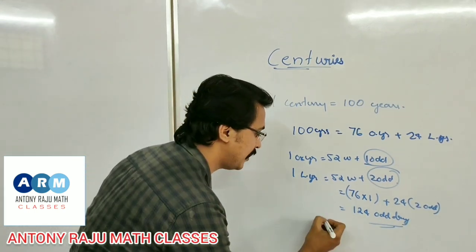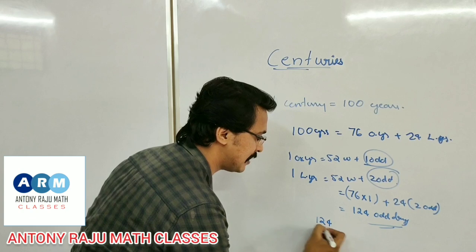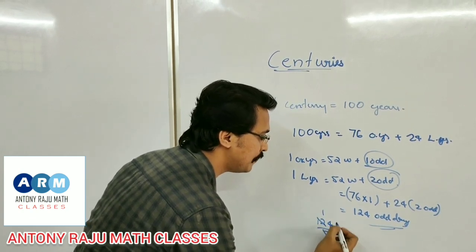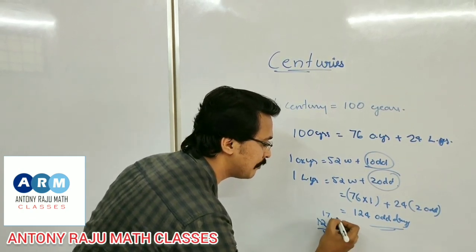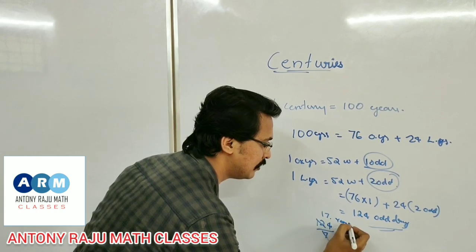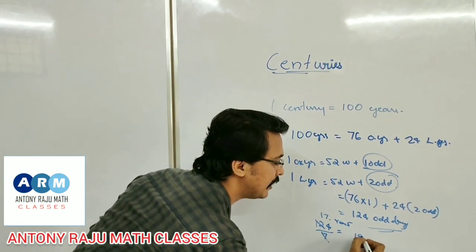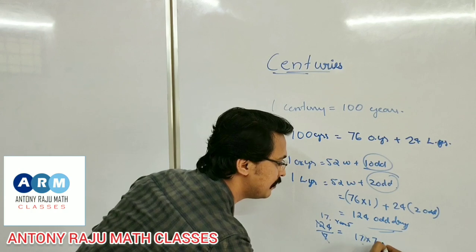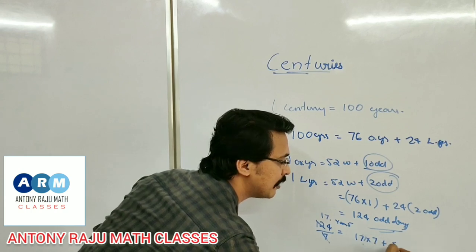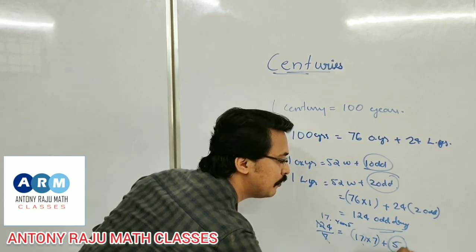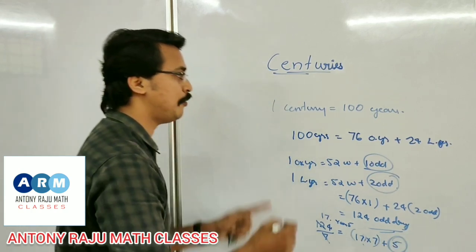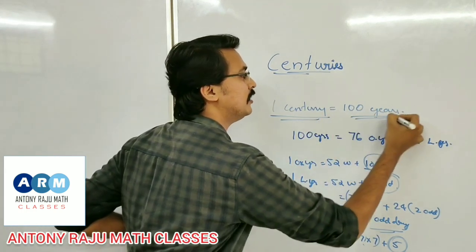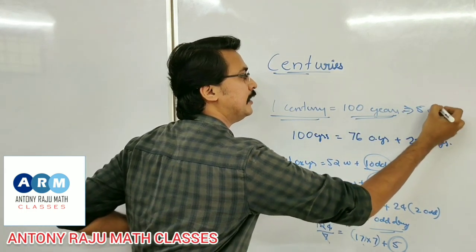When we divide 124 by 7, we can calculate how many odd days. 124 divided by 7 gives 17 remainder 5 — that is, 17 into 7 plus remainder 5. So in 1 century, there will be 5 odd days.